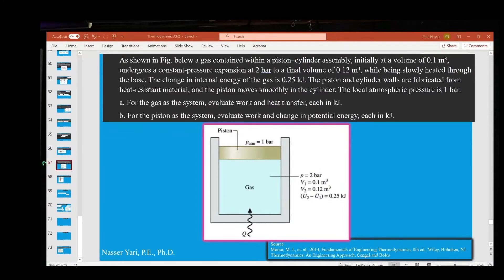There it is. So we have this piston and it contains a gas initially at the volume of 0.1 cubic meter and it undergoes a constant pressure expansion at 2 bar, which is 2 atmosphere pressure, to a final volume of 0.12 cubic meter. And while being slowly heated through the base, the changes in the internal energy of the gas is about 0.25 kilojoule. They want to know for the gas as a system, evaluate work and heat transfer each in kilojoules.